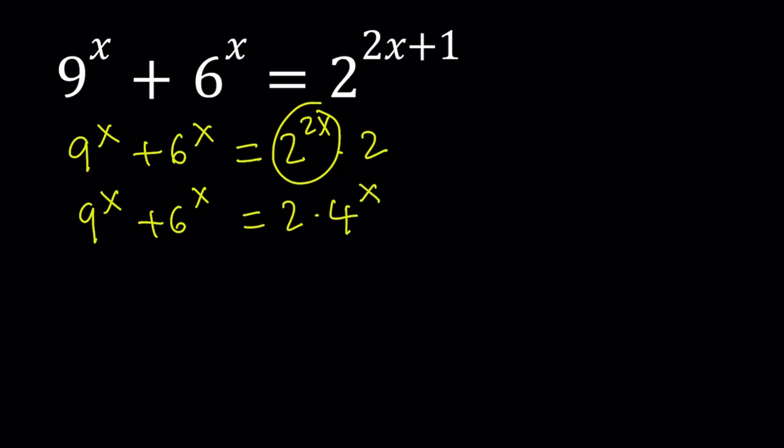One thing that you should always notice with these kinds of problems, because they appear in competitions and some exams, 9, 4, and 6 are specially chosen. How? If you multiply 9 and 4, you get 36. And 36 happens to be 6 squared. Get the idea? Hopefully you did. Now let's see what happens.